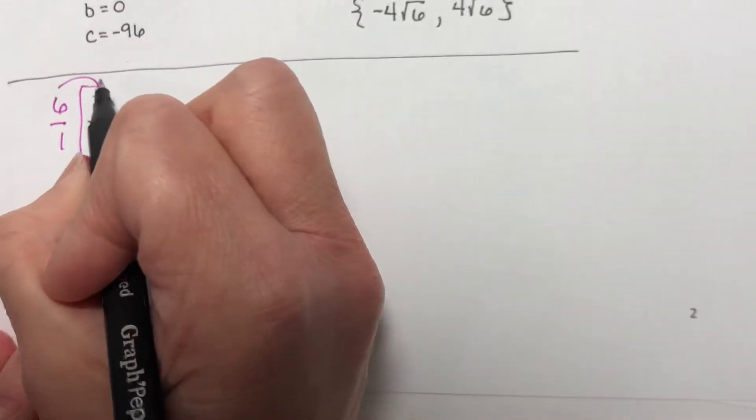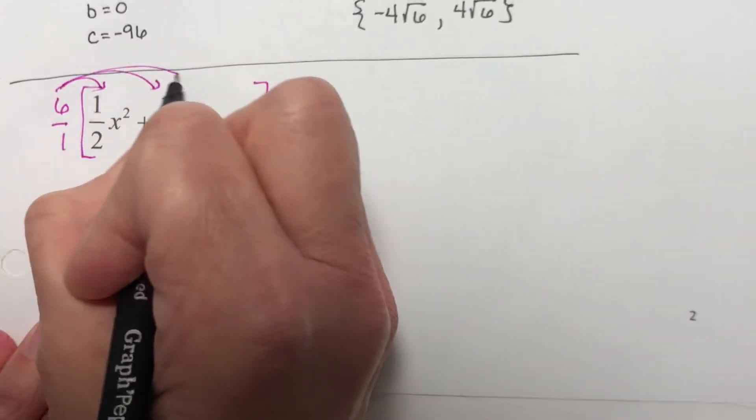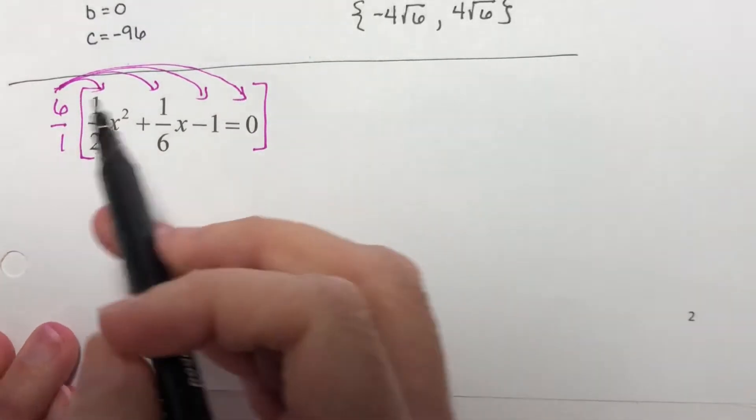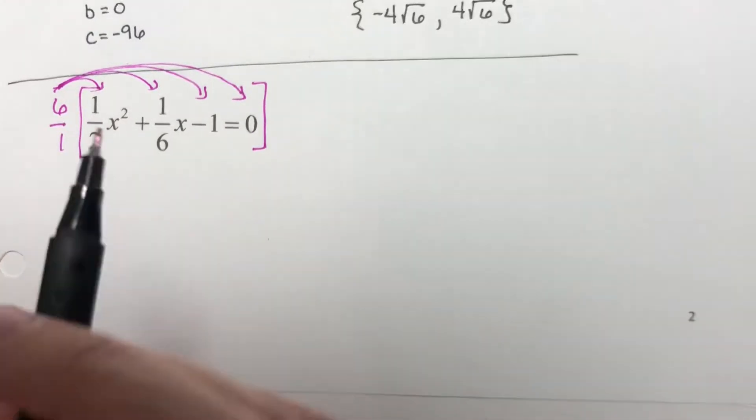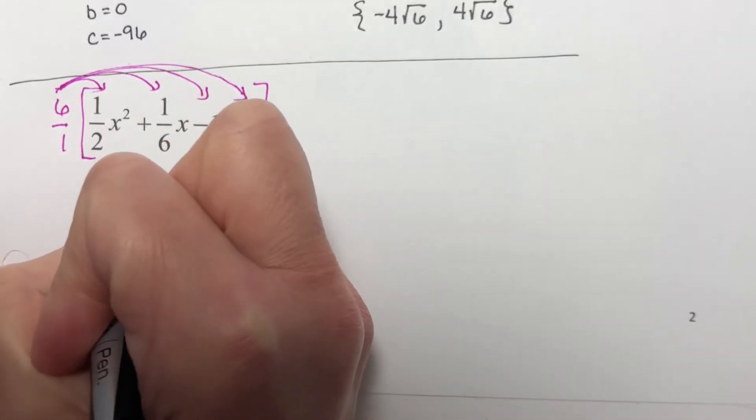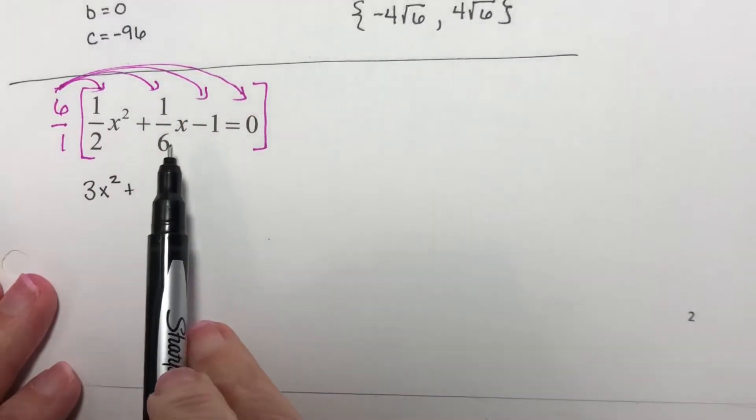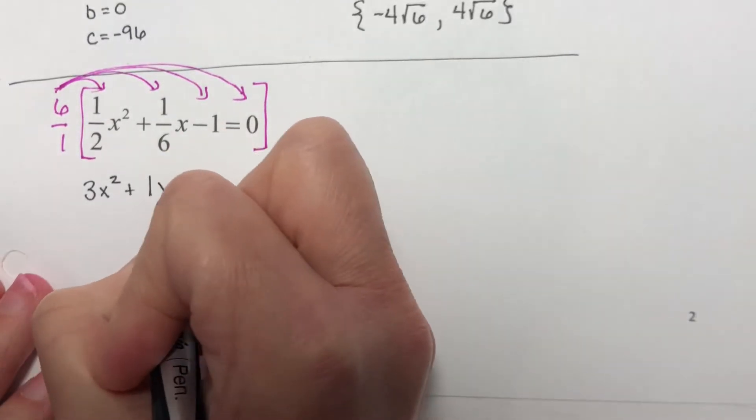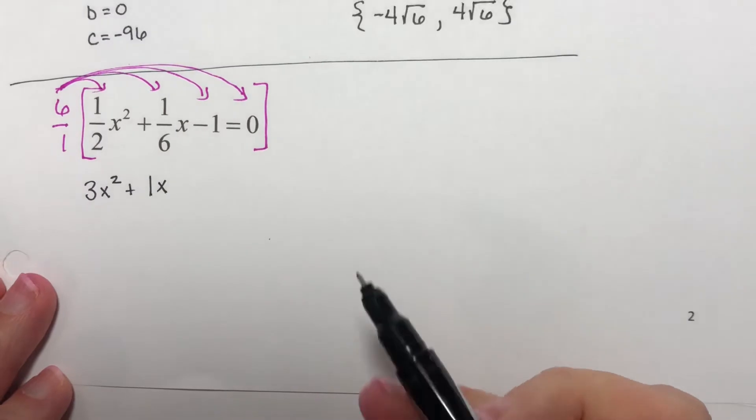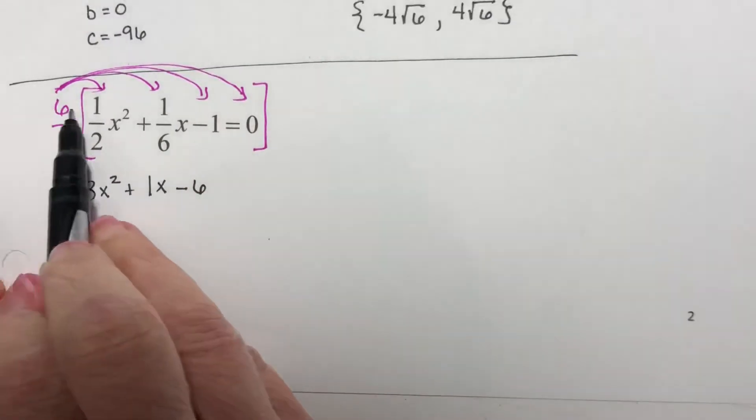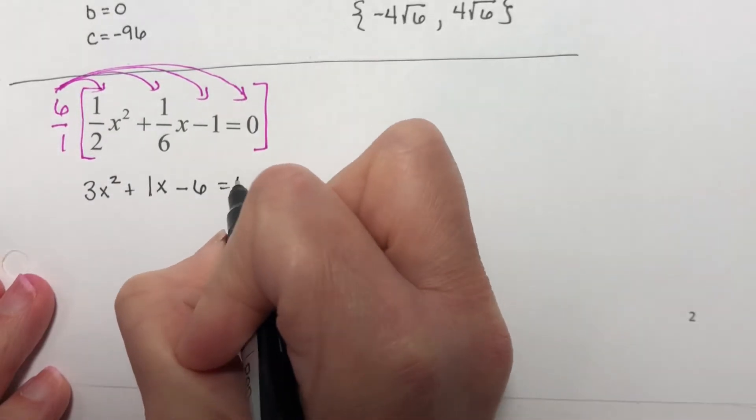Okay, so think of this as distributing all the way through everything here. Well, 6 times 1 half, half of 6 is 3. So this is 3x squared plus 1 sixth of 6 is 1. I'll go ahead and write the 1 in here, even though it doesn't have to be there. 6 times negative 1 would be negative 6. 6 times 0 is 0.